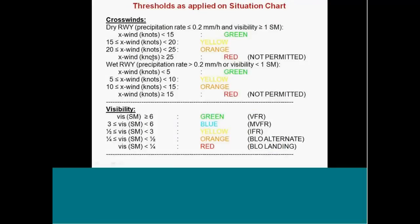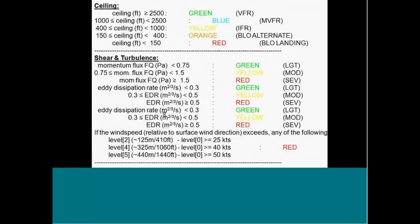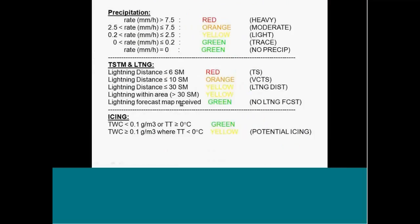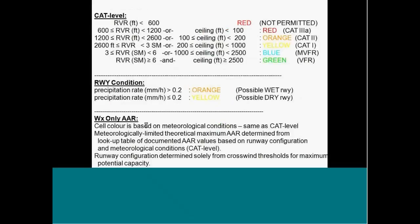The thresholds where all the things, the colors change, are indicated here for crosswinds and visibility, ceiling, shear and turbulence, precipitation, thunderstorms and lightning. For example, it goes red when there's lightning within six statute miles of the airport. And icing, the CAT level, this is what we need runway visual range for. Can't get CAT level without that. And we're predicting runway condition and weather only, airport arrival rate.